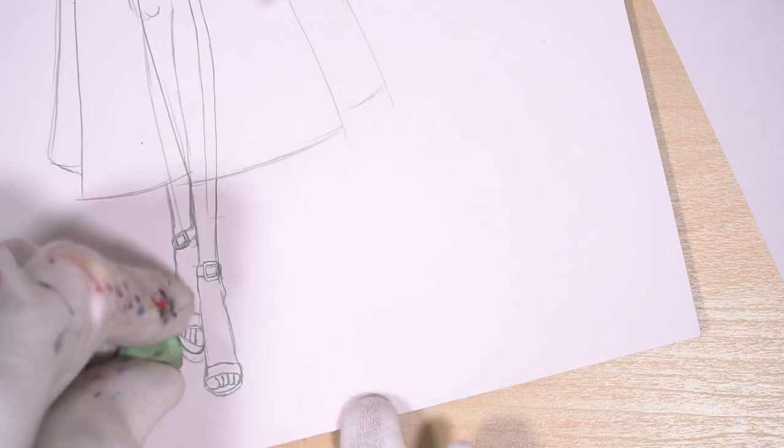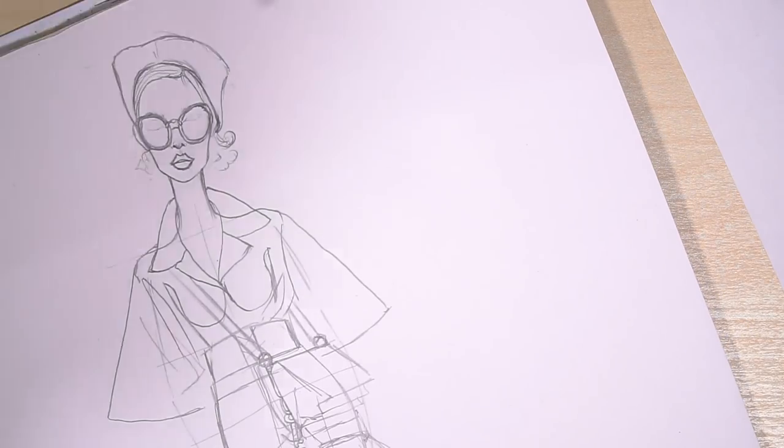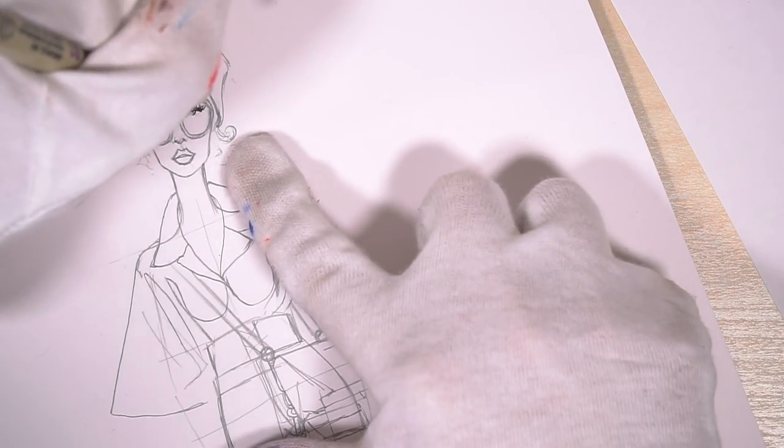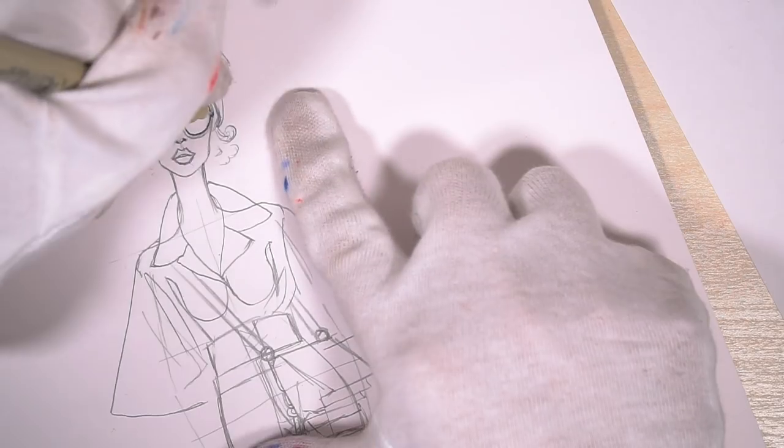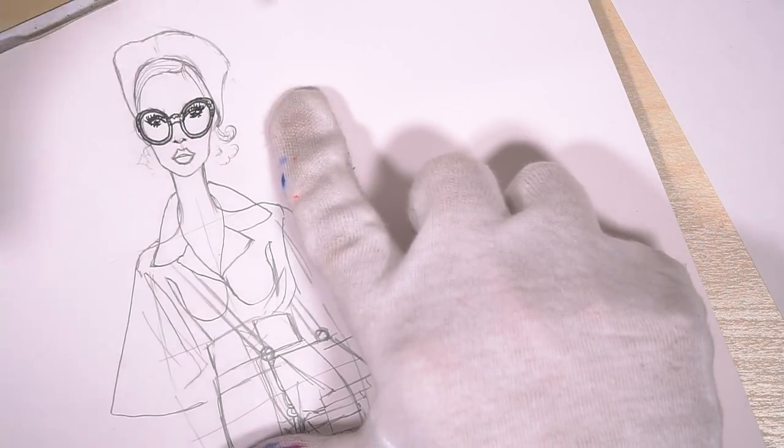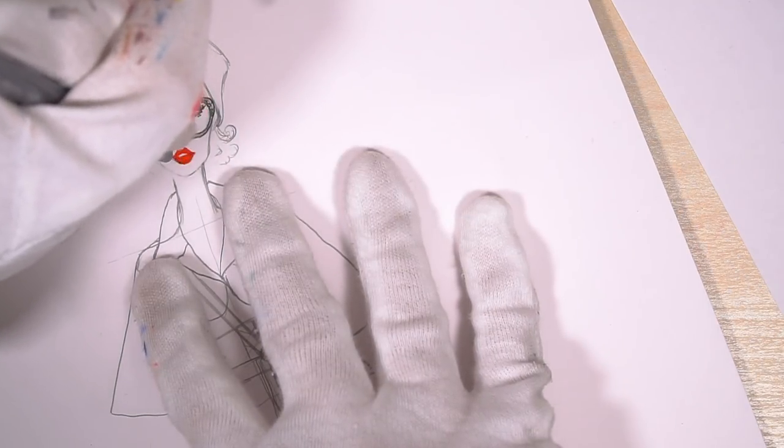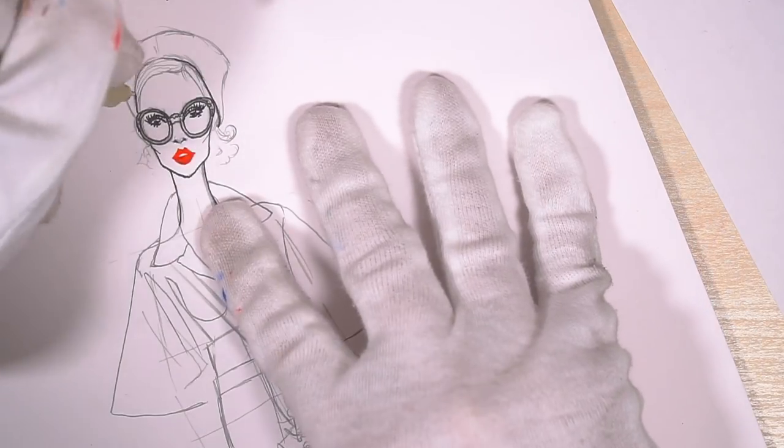Next what we're going to do is we're going to outline everything that we need with a fineliner pen and erase pencil. Since her hair is very light, we don't need to outline her hair in this case. But for all the other details, feel free to outline. And I also don't recommend outlining lips since they are red, and black fineliner will look like a pencil.